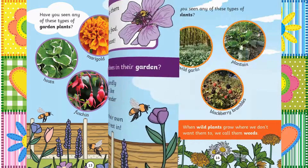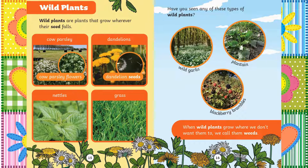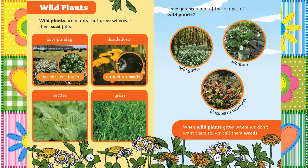Chapter 5: Wild plants. Wild plants are plants that grow wherever their seed falls. Cow parsley, dandelions, nettles and of course grass. Have you seen any of these types of wild plants? Wild garlic, plantain and blackberry brambles. When wild plants grow where we don't want them to, we call them weeds.